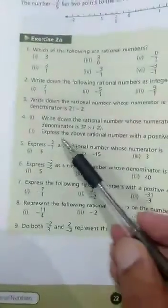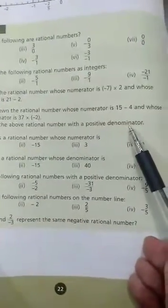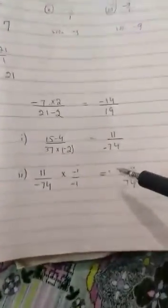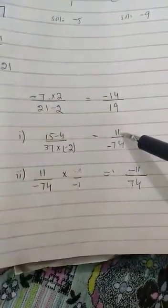Now about the second part of question number 4. Express the above rational number with positive denominator. Here you can see that in the first part denominator is negative, numerator is positive.